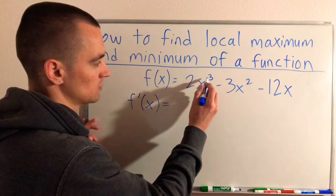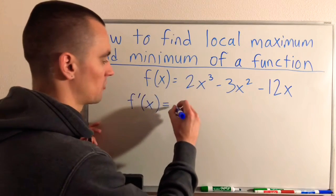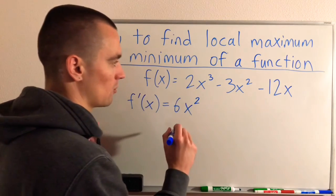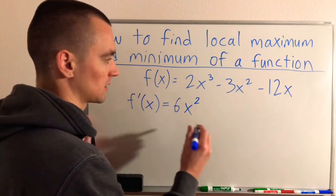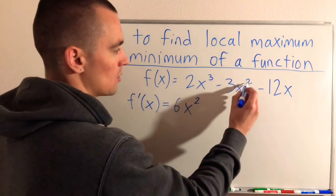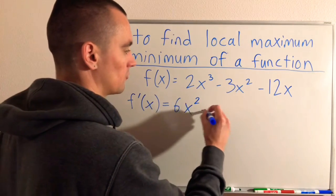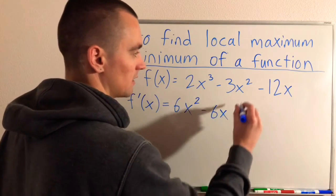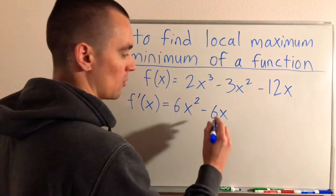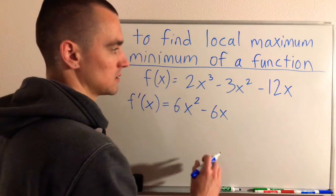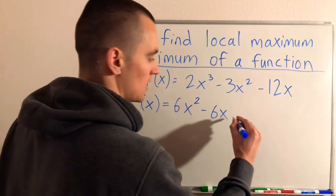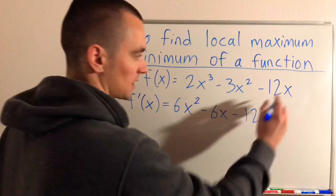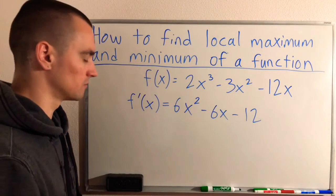Power rule says we'll bring the 3 down in front — that'll give us 6x — and then we'll lower the power by one: 6x squared. Bring this power down in front will give us minus 6x, and then lowering the power by one will just leave us with an x. And then minus 12 — the x just kind of falls off for the derivative.